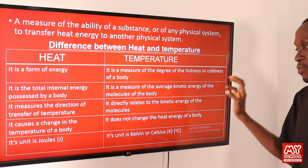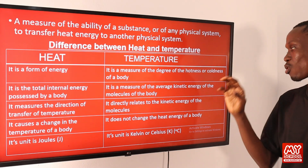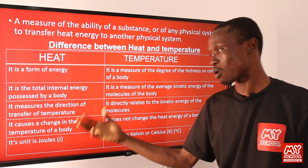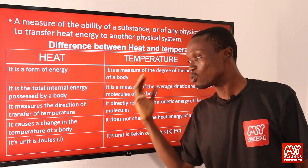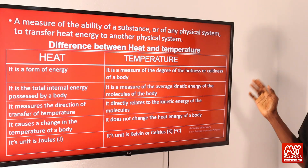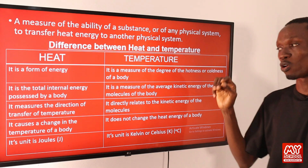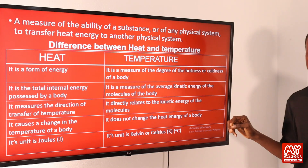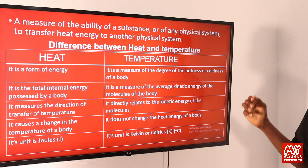Number four: heat causes a change in the temperature of a body, whereas temperature does not change the heat energy of a body. Number five: the unit of heat is the joule, since it is energy, whereas the unit of temperature is Kelvin or degree Celsius depending on the temperature scale. Additionally, heat depends on the quantity of matter, whereas temperature does not depend on the quantity of matter.